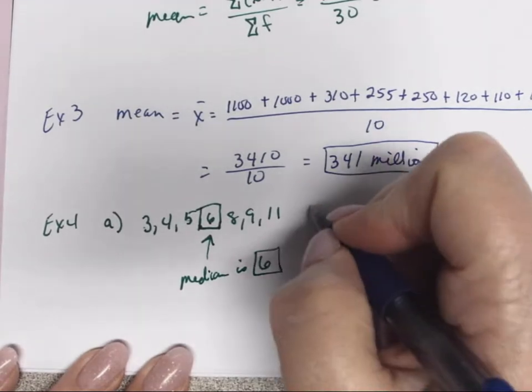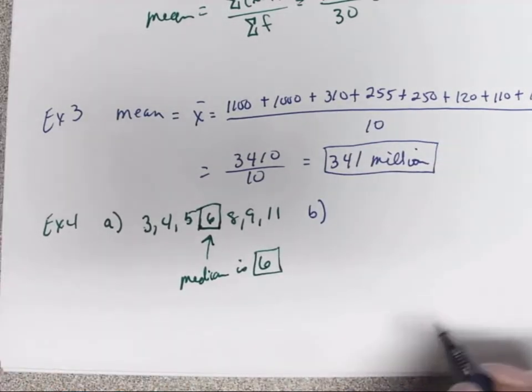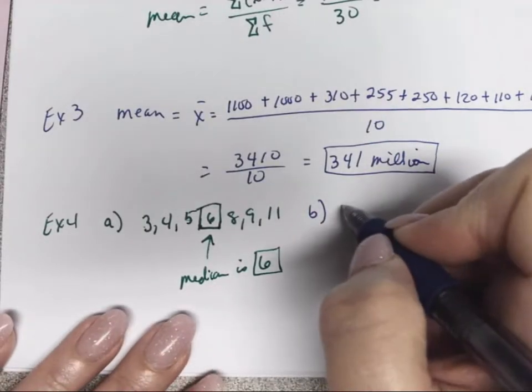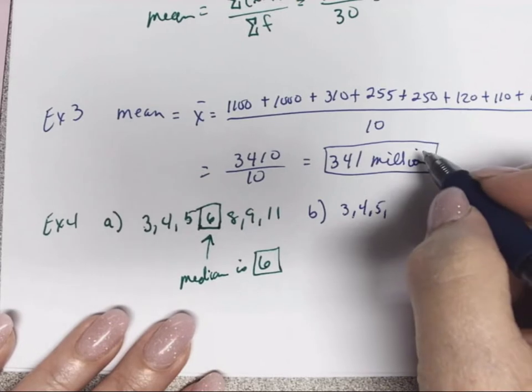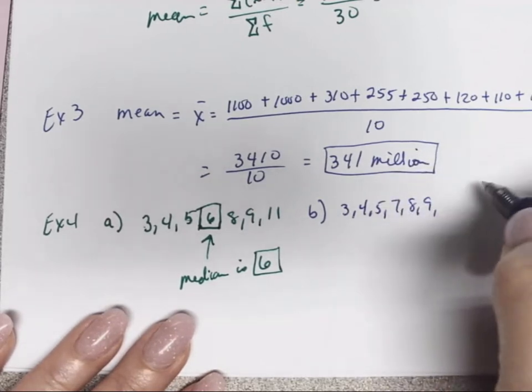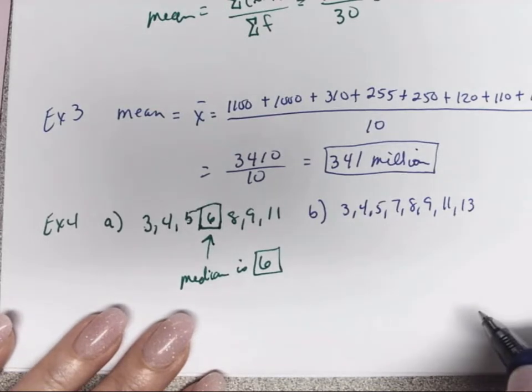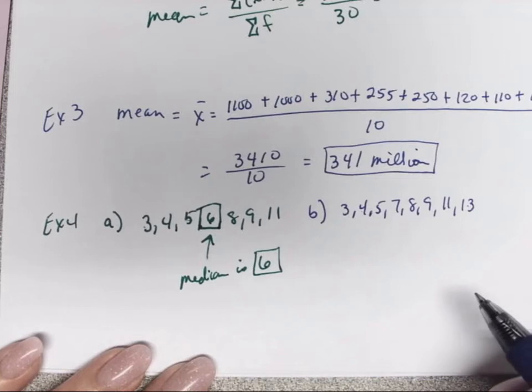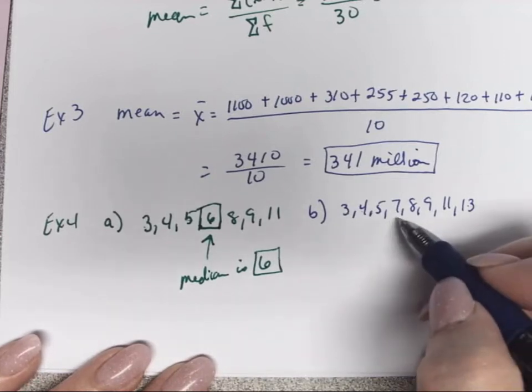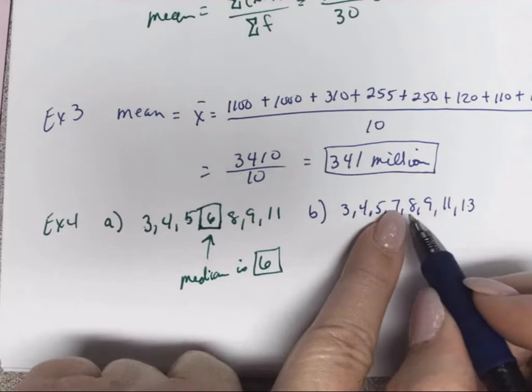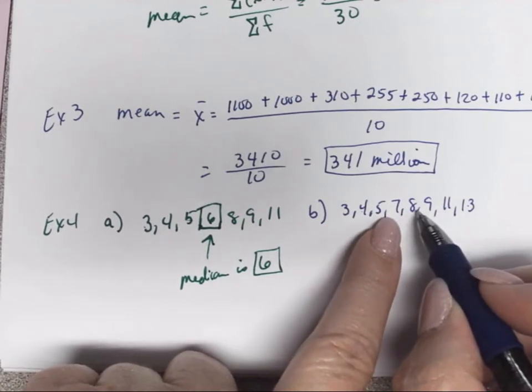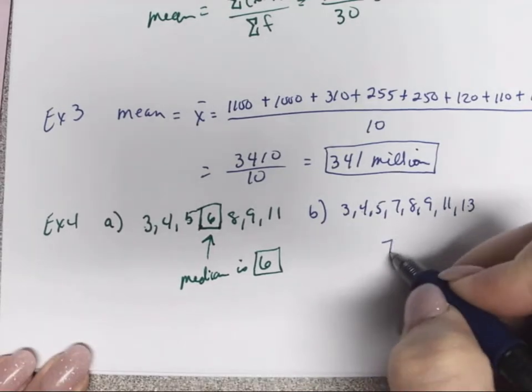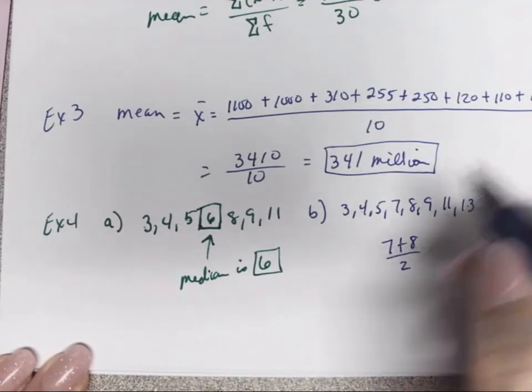For part B, we have another list of numbers. Again, I'm going to put them in numerical order. So we have 3, 4, 5, 7, 8, 9, 11, and 13. This time we have eight numbers. So if we divide that by two, we get four. That means we're on four on this side and four on this side. But we have two numbers. We don't have a middle number this time because it's an even number of values.